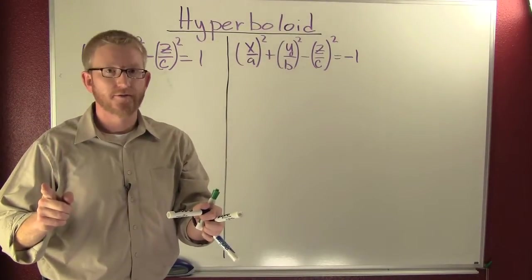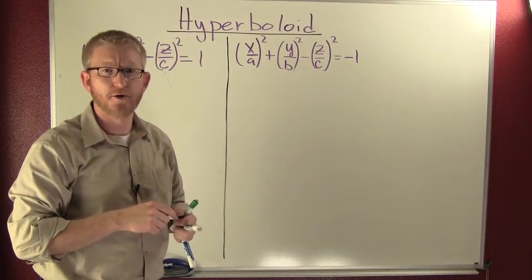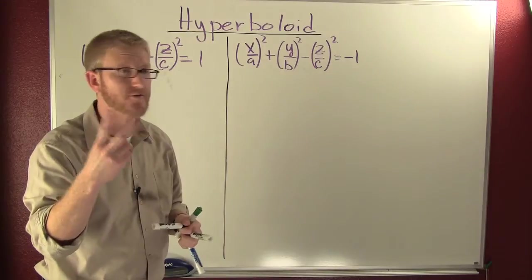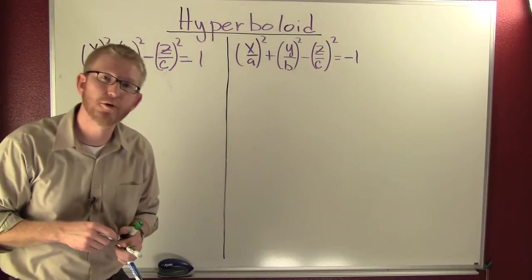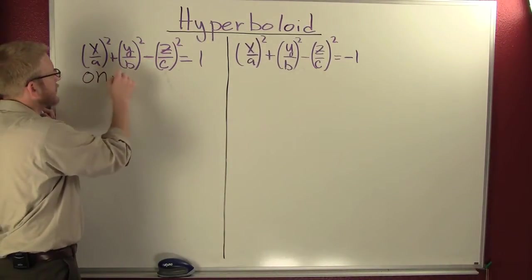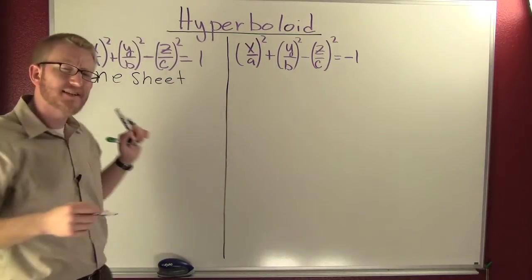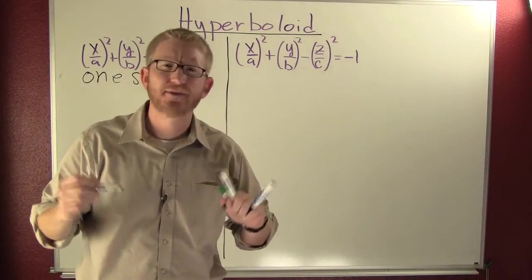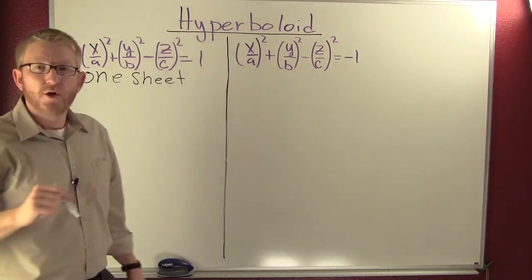We're still in quadric surfaces. Hyperboloid - we need to talk about hyperboloid, not just one of them, but two of them. The first type of hyperboloid I want to talk about is a hyperboloid of one sheet.